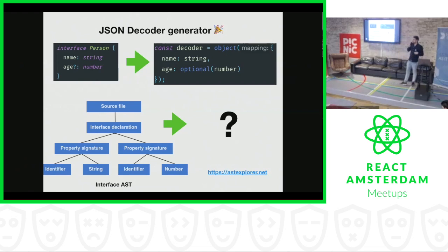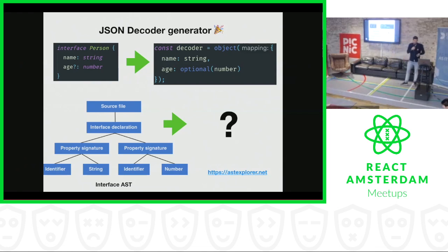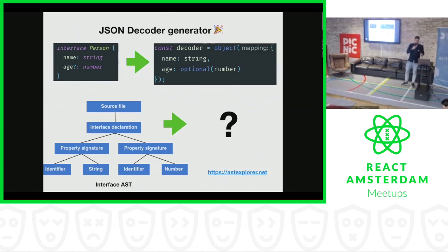What we actually want to do is transform this abstract syntax tree into another abstract syntax tree which represents the decoder. And later we can print that abstract syntax tree to a file and have a decoder available in our code.